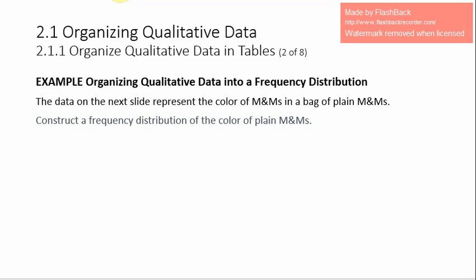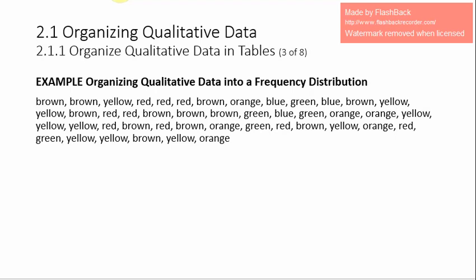Here is an example to show us how to organize qualitative data into a frequency distribution. The data represents the color of M&Ms in a bag of plain M&Ms. We want to construct a frequency distribution of the color of plain M&Ms, creating a table that contains categories and the number of occurrences of each color.